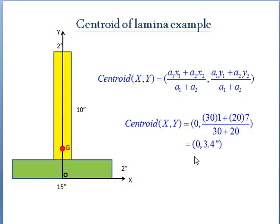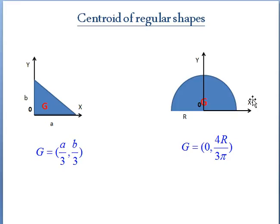So that gives rise to the centroid of the lamina as 0 comma 3.4 inch. So in this fashion you can divide any complex shape into simple geometries and you can obtain the centroid of the complex lamina. So we can remember a few simple centroids of the standard shapes.